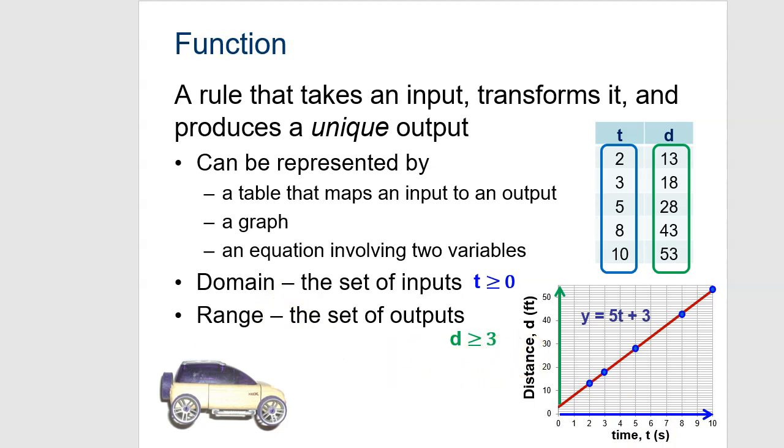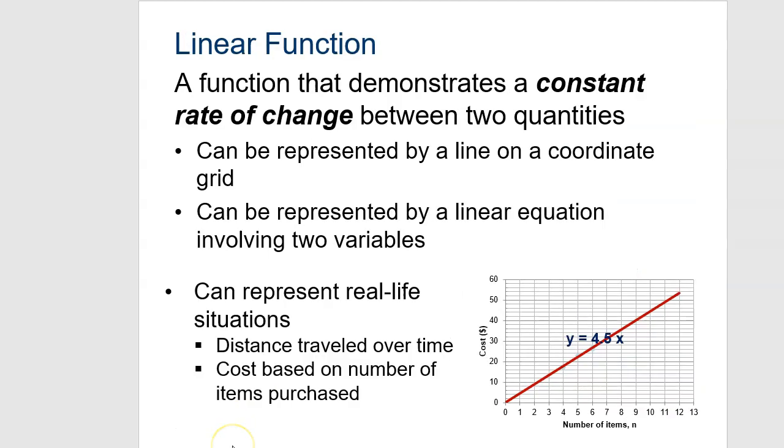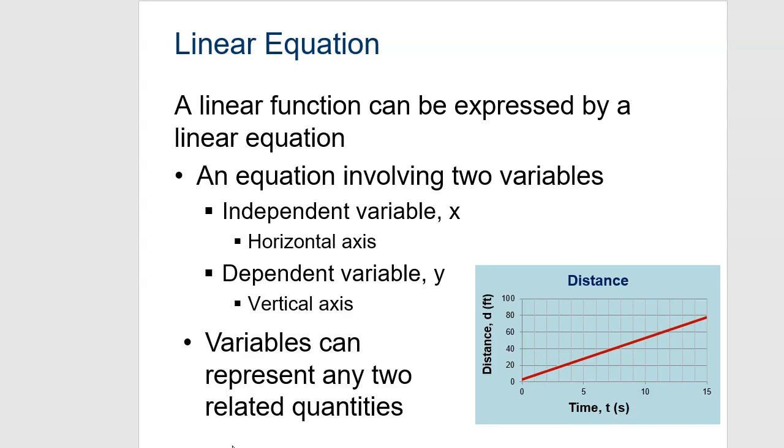If it's a linear function, it represents a constant rate of change between the quantities. We are looking at two specific things, it's one thing versus another. And we've already talked about the independent variable versus the dependent variable, that's all this slide is talking about.